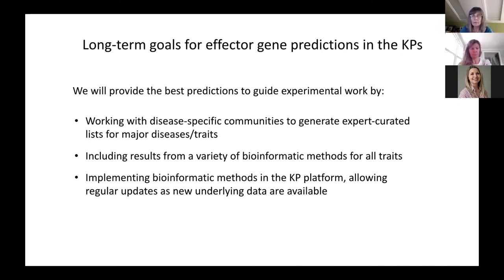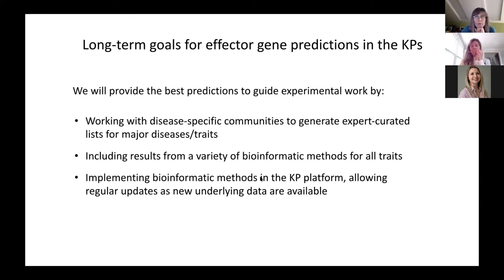That's a very labor-intensive activity, and it can be done for the major diseases but not for every trait. A lot of people are also working on bioinformatic methods that can be run for all traits using commonly available sources of data. So we want to include results from those as well. For all traits that we can get them for, the first step will just be to include the lists and the underlying evidence in the portals. Eventually, we would like to implement some of these methods in-house so that we can keep rerunning them as new data are available and get updated predictions.